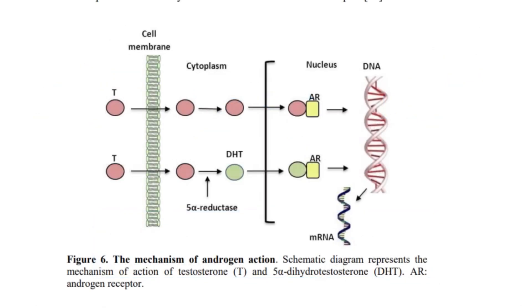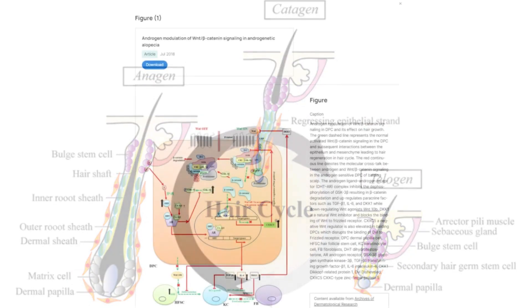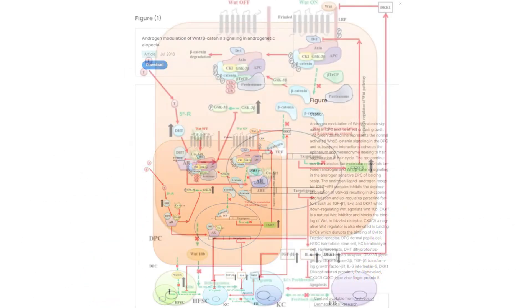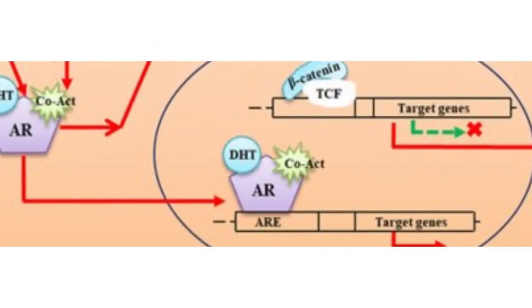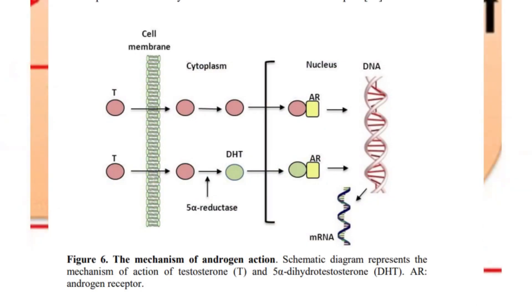Hair follicles have androgen receptors in their cells. DHT has a higher affinity for these receptors than testosterone does. When DHT binds to these receptors, it forms a DHT-receptor complex. Once bound to the androgen receptor, this complex moves into the cell nucleus.